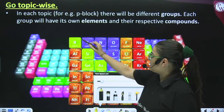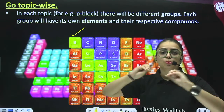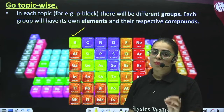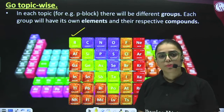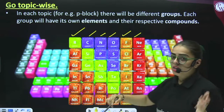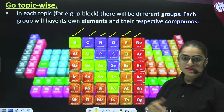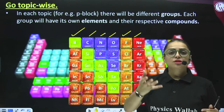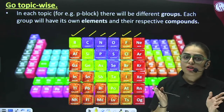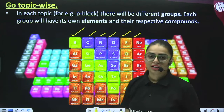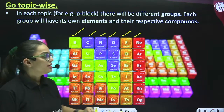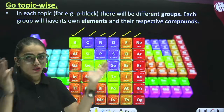For example, take your boron family first — boron, aluminium, gallium, indium, thallium — complete them in detail: general properties, physical properties, chemical properties. In the same way, go with carbon, then nitrogen, oxygen, fluorine, and neon. In class 11th we have boron and carbon family, and in class 12th we have from nitrogen to neon — group 15 to 18. P block is really important. Similarly, cover D block first and then F block.